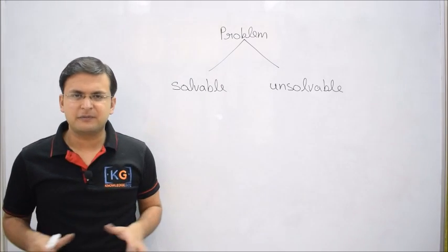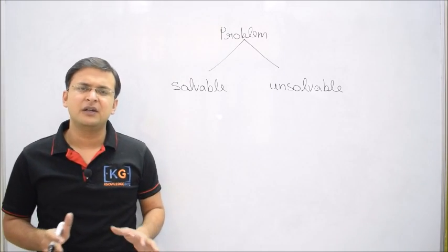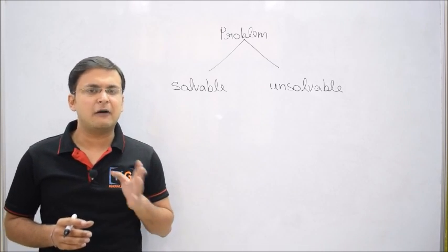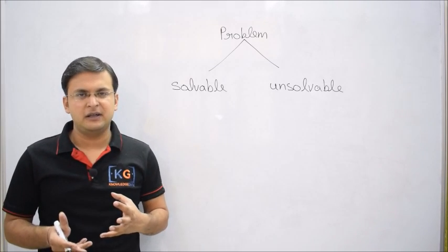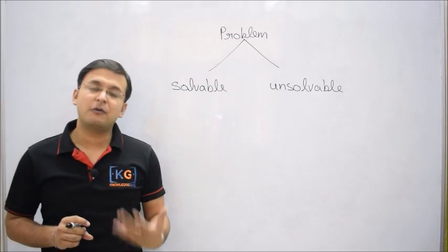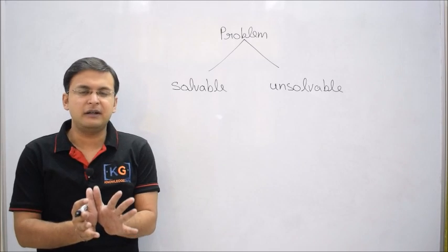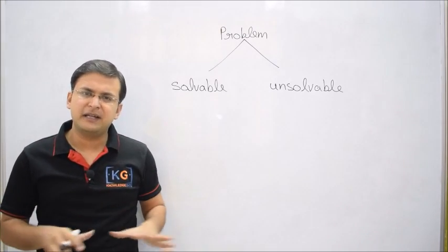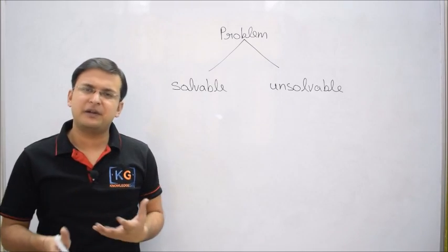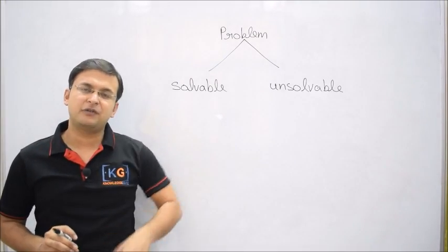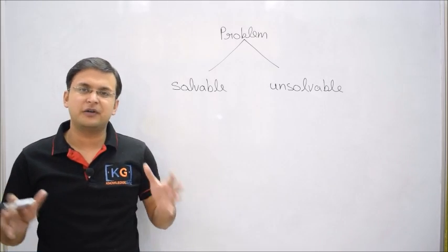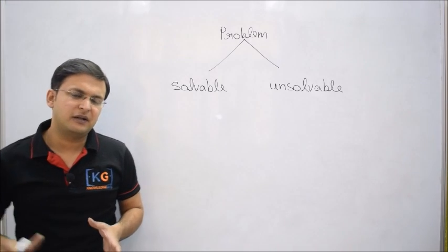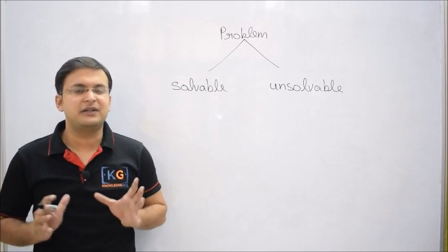Let me ask a very basic question: what does computer science deal with? We study a lot of subjects like database, operating system, theory of computation, discrete maths — but what do we actually deal with? We actually deal with problem solving, or you can say machine learning in the sense that we train a deterministic machine — a computer — on how to work. We write algorithms and procedures, which are then translated into programming languages. So basically, computer science deals with machine learning.